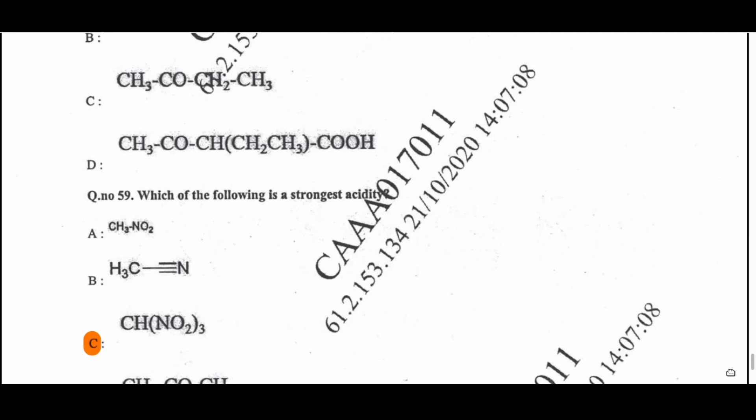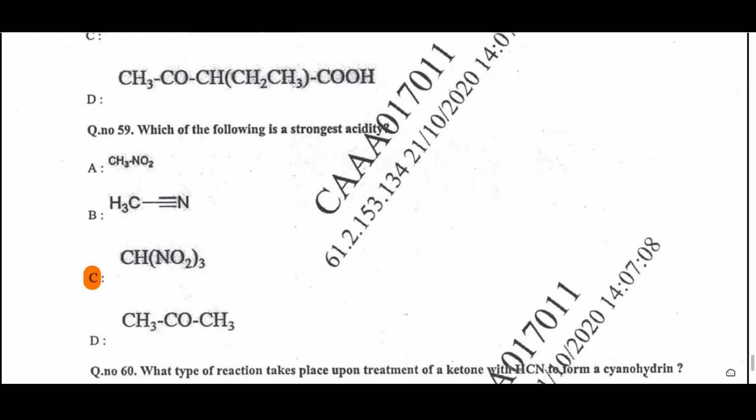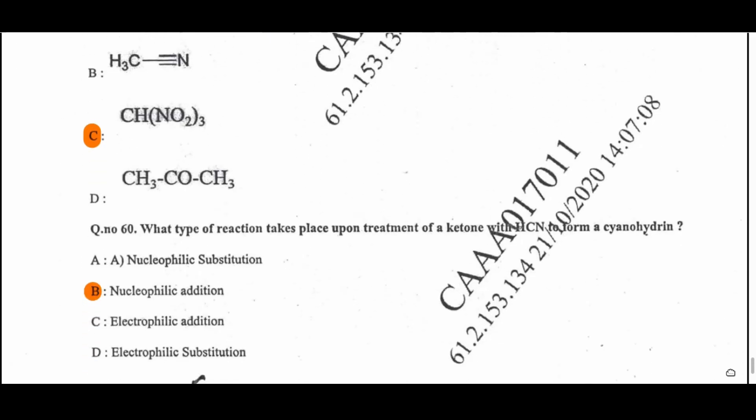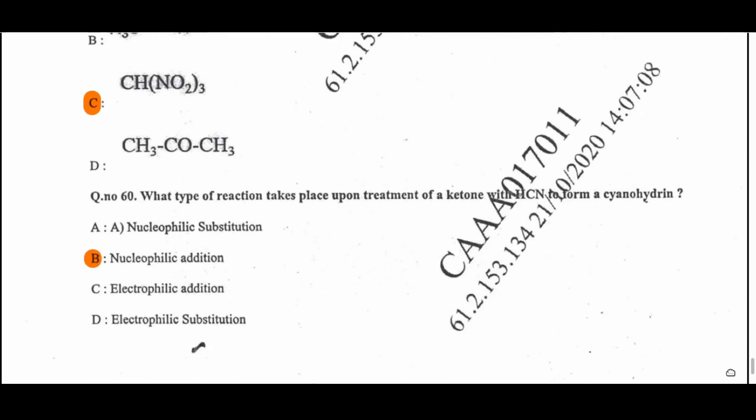Question 59: Which of the following has the strongest acidity? Option C — the carbon bearing three nitro groups is more acidic than all others. Question 60: What type of reaction takes place upon treatment of a ketone with HCN to form a cyanohydrin? That is a nucleophilic addition reaction. Thank you for watching and subscribe for more videos.